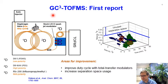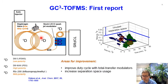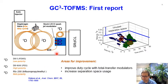Our group first reported a GC Cubed instrument with time-of-flight mass spectrometry detection in 2017. This instrument used a diaphragm valve as the modulator linking the 1D and 2D column separations, and a quad jet thermal modulator to link the 2D and 3D column separations. This instrument used a DB5 column on 1D, a DBWAX column on 2D, and an RTX200 column on 3D. While sufficient for a proof-of-principle instrument study, there were a few things we wanted to improve and address.